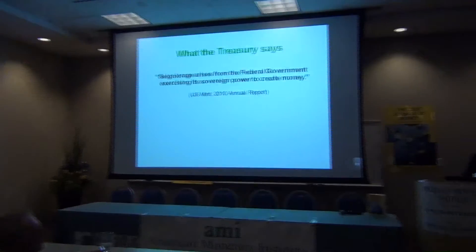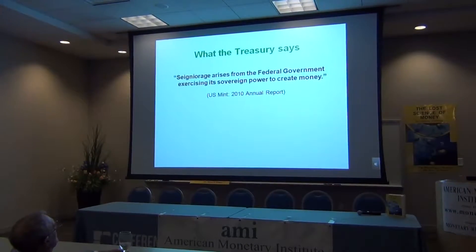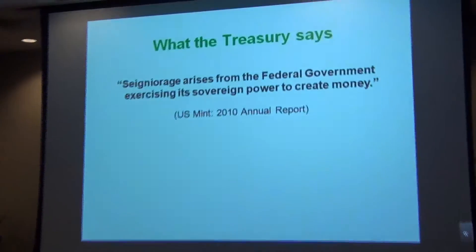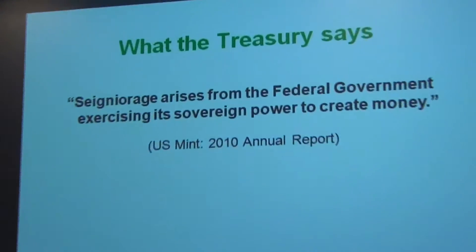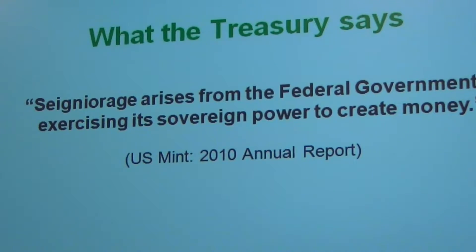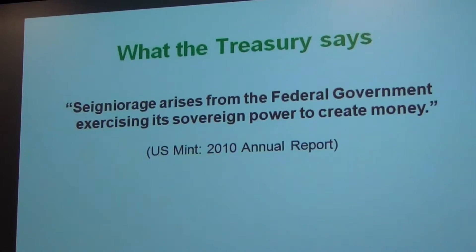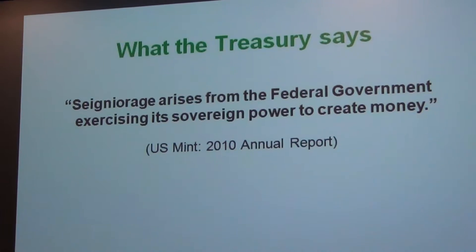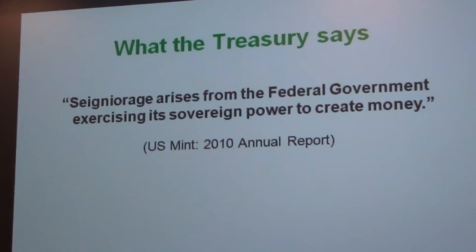The Treasury knows it has this power. They say it in the US Mint annual report: seigniorage — that's the profit from creating money — arises when the Federal Government exercises its sovereign power to create money. So they know they can do it, and they do when they issue coins, but that's only about 0.4% of the money supply, so they're not really doing much of it.